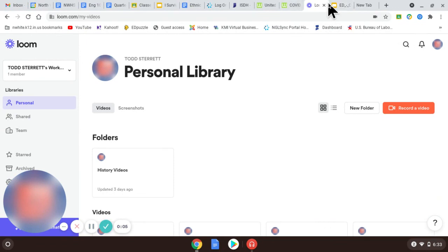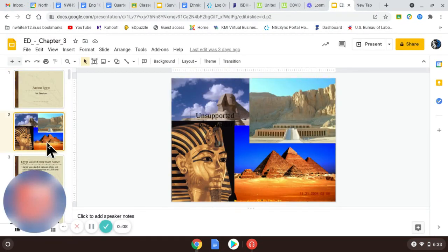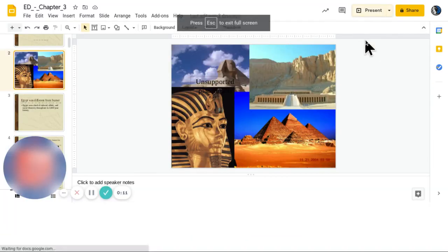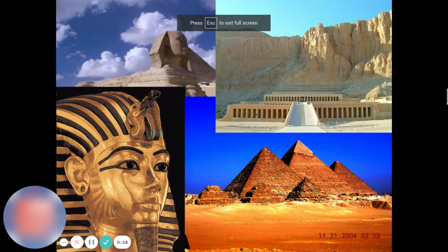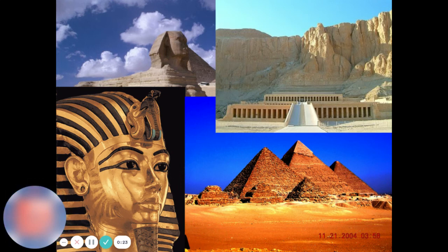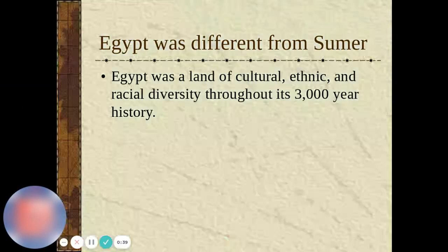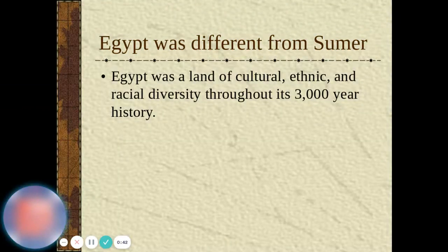Hello, today we're going to talk a little bit about ancient Egypt. We're not going to make this video super long because there are like 60 slides, so we'll go through about 10 or 15 of them and call it good. There are some pictures of the monuments out in Egypt. Egypt was a land of cultural, ethnic, and racial diversity throughout its 3,000 year history.